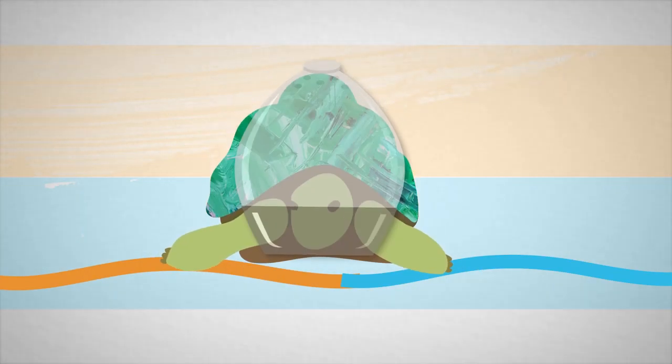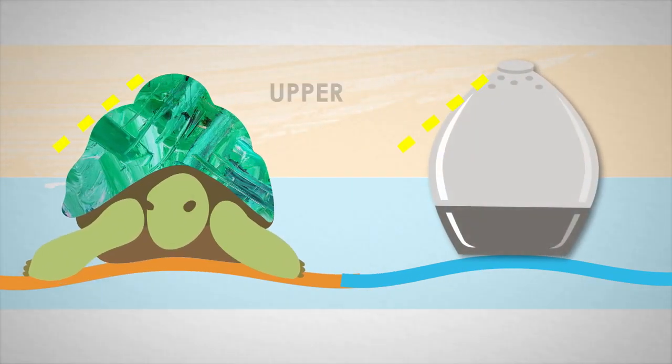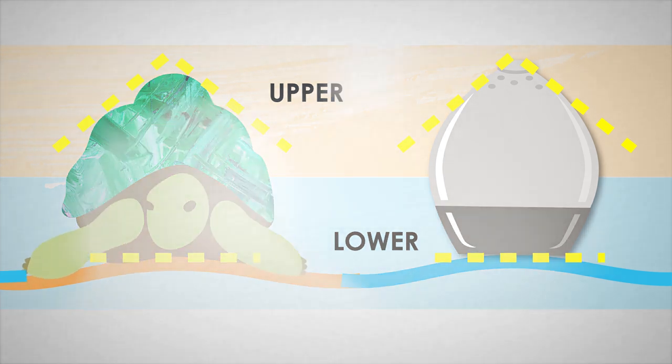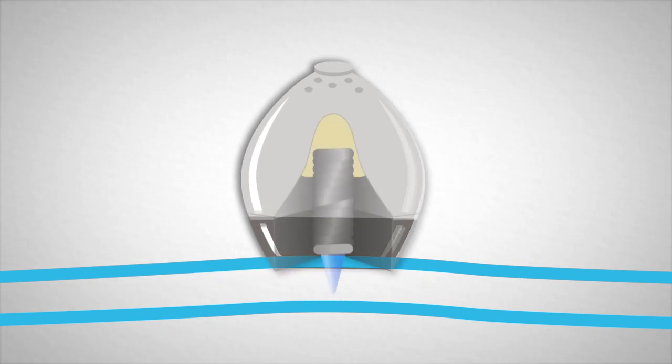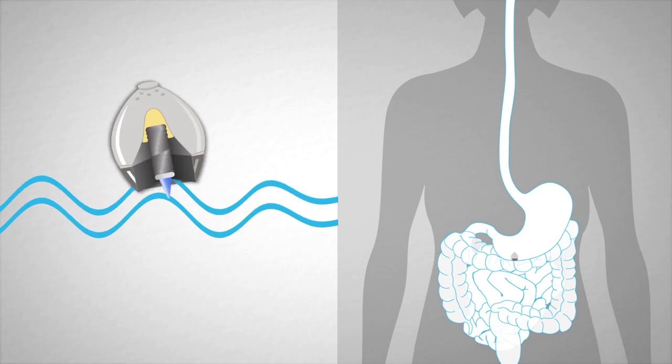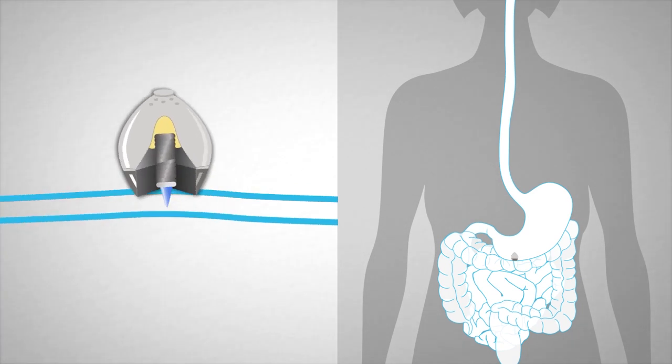Both the tortoise shell and the SOMA possess upper portions with pointed tops and lower portions with level bottoms. The high curvature body allows the device to reorient itself utilizing gravity alone. The flat base ensures that the SOMA does not tip over when moved by stomach contractions.